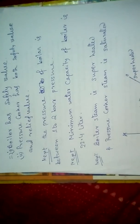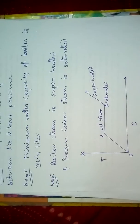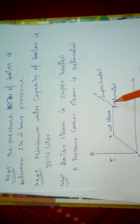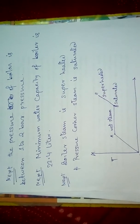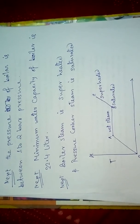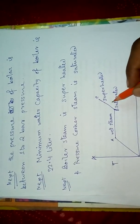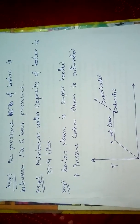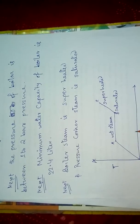The most important point is that boiler steam is superheated steam and pressure cooker steam is saturated steam. As shown in the T-S diagram, the A-B portion is wet steam, the B point is saturated steam, and B to C is superheated steam. The boiler steam always exists along the B-C line, that is, superheated steam.